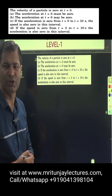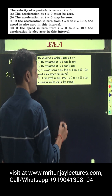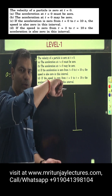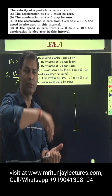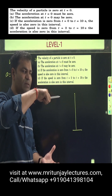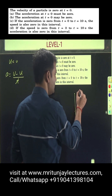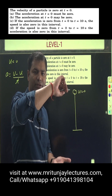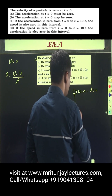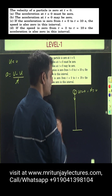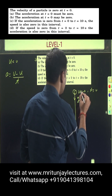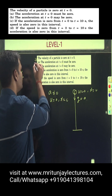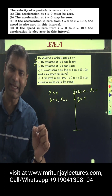Take an example. Suppose this is the ground and a ball is dropped from height h. At t=0, the initial velocity is 0. But what about acceleration at that time? That is g — so acceleration is not 0, even though u is 0. Therefore, option A, which says acceleration must be 0, is incorrect.